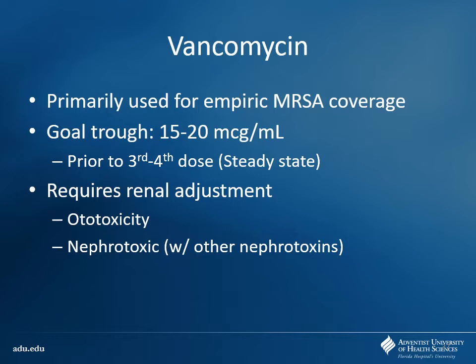Next, we have vancomycin — used for gram-positive coverage, mainly for MRSA. Notice we shoot for a higher trough normally. For like a normal bacteremia or skin soft tissue infection, I can maybe do 10 to 15 as my trough. Because vancomycin is a time-dependent killer — we do troughs because I want to make sure it's above that MIC. So by shooting for a higher trough, I make sure I get better concentrations in the lung and kill off that MRSA.